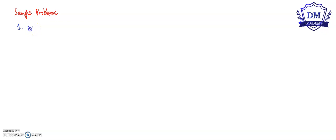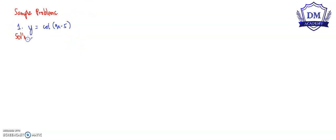Let's have the function y is equal to the cotangent of 9x minus 5. Again, our function y is equal to cotangent of 9x minus 5. So we will let u be equal to 9x minus 5, and our function y is equal to cotangent u.